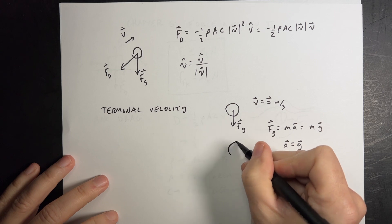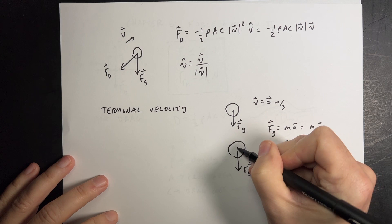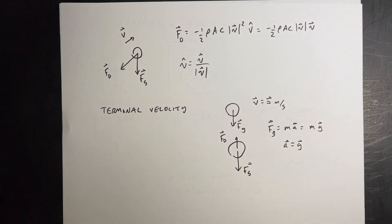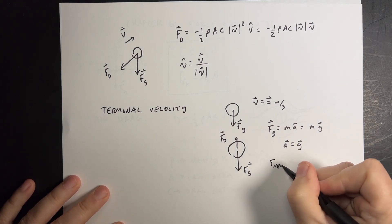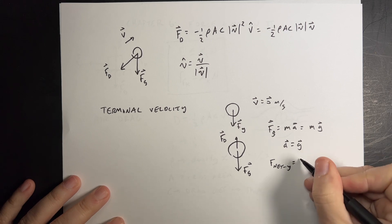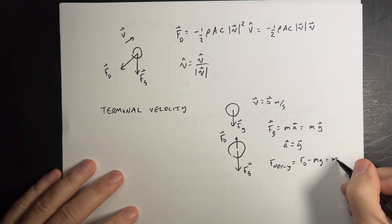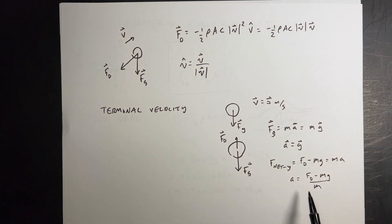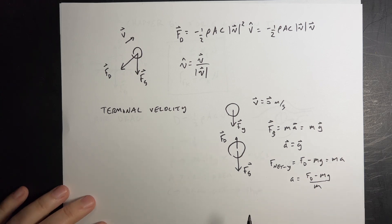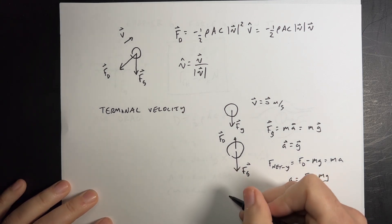But that means the velocity increases. So after a short time, we would have this, FG. And then I'd have a drag force. So now I could write, let's just write this in the Y direction. F net Y is going to be FD minus MG, because that's the Y component of the gravitational force. And that's going to be MA. So now A is FD minus MG over M. It's going to be less than 9.8. So it's going to accelerate down, but the acceleration magnitude is going to decrease.